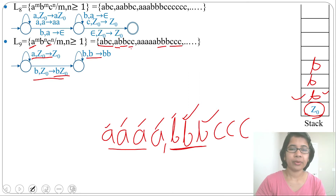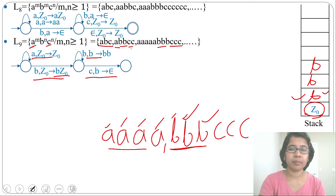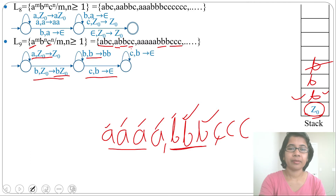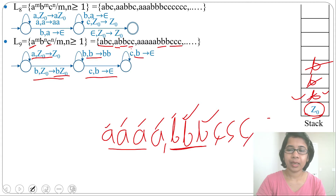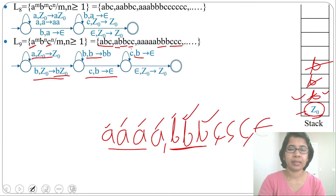After all b's are pushed, for c we pop b. Create another state with transition (c, b) → ε, meaning it pops one b. This is a self-loop for all c's: (c, b) → ε. Each c pops one b. After all c's pop all b's, with ε input and topmost symbol Z0, we go to the final state by skipping Z0.